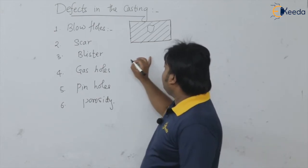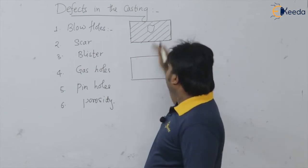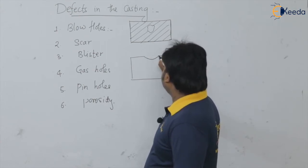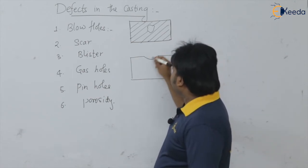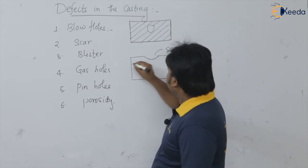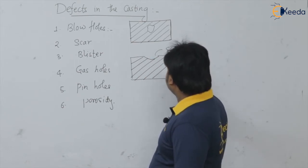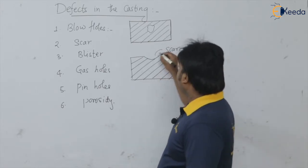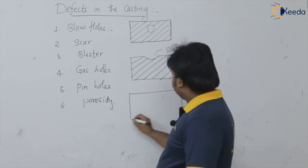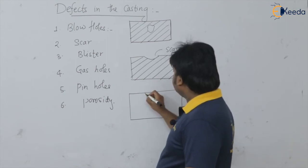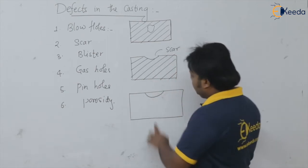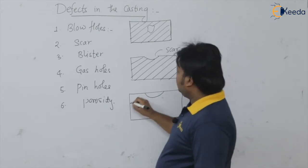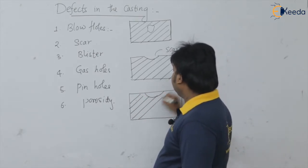If you take certain flat surface castings, this bubble present as a shallow depression on the flat surface is known as the scar. Simply, the blow hole which is present on the flat surface is known as the scar. Then blister — blister is nothing but the extension of this scar covered with a thin layer of the liquid molten metal. This is known as the blister.